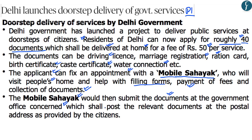After the documents are submitted by the mobile Sahayak, the Delhi government office verifies and processes them, then posts the relevant service documents — such as the driving license, marriage certificate, or ration card — to the postal address of the applicant. This is how a Delhi resident can avail doorstep delivery of services.